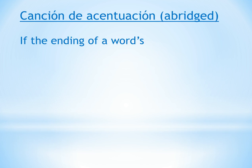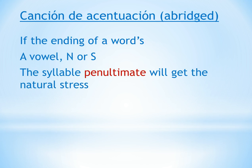As a reminder, our abridged accent song: if the ending of a word's a vowel, N or S, the penultimate syllable — meaning the second to last syllable — will get the natural stress. This goes to the tune of the Mickey Mouse Club song. This tells us how we pronounce words when they don't have an accent, and helps with knowing where the original accent is on the command. If it ends in a vowel, N or S, then the stress goes on the penultimate syllable.